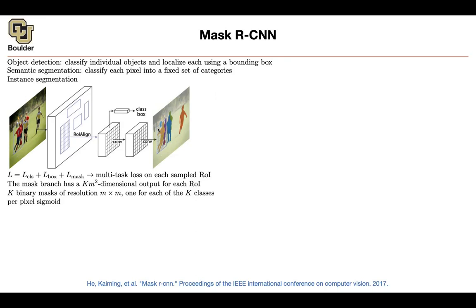Object K either exists or it doesn't exist — these are independent tasks. If object K exists, it's not going to decrease or increase the probability of another object existing. These are binary classifications, that's why you have a sigmoid — it's not a softmax. Once you do that, you're going to get the average binary cross-entropy loss for the mask.